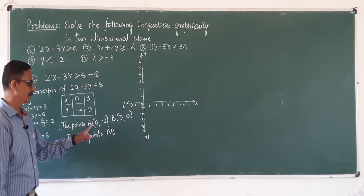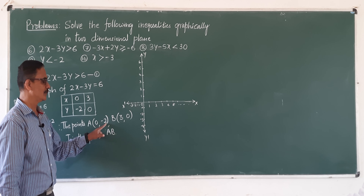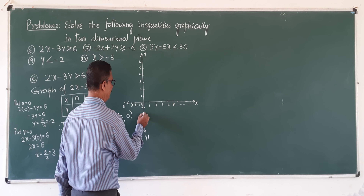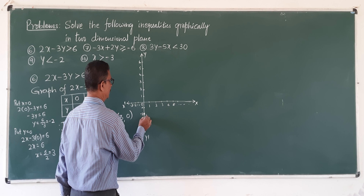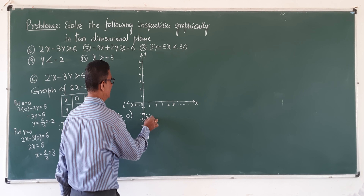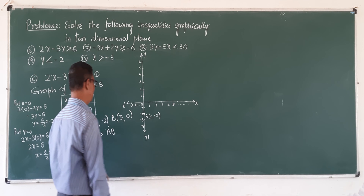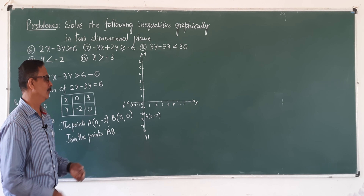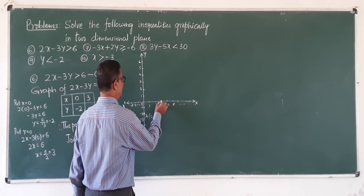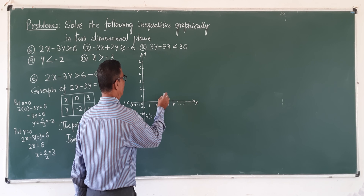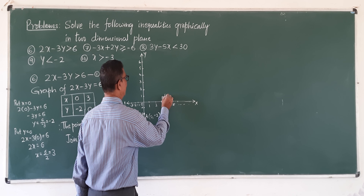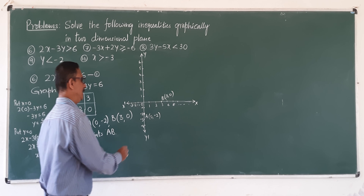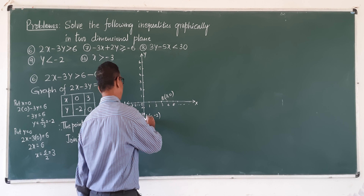Locate those points. First point: x equals 0, y is minus 3 — that is point A (0, minus 3). Next, B is the point (3, 0): x is 3, y is 0. Join the line A, B.